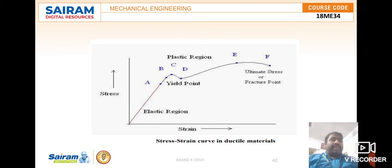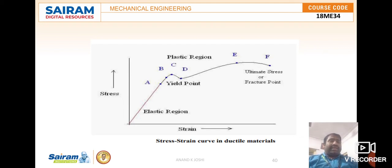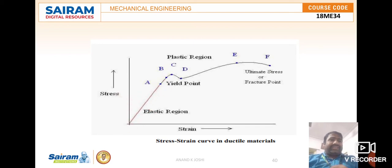This is the stress-strain diagram. Initially, based on the ductile material curve drawn here, from the origin to point A it will be linear — there is no curve at all. This region is called the proportionality limit. Hooke's law states that stress is directly proportional to strain within the elastic limit. That red line from origin to point A represents the elastic region, which is Hooke's law or Young's modulus. Within the elastic limit, stress is directly proportional to strain.